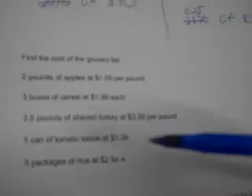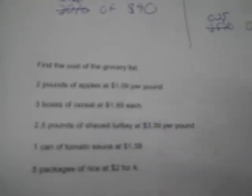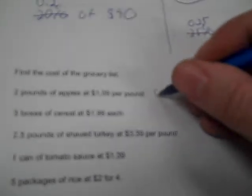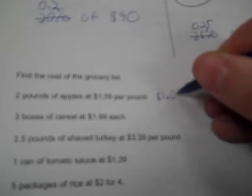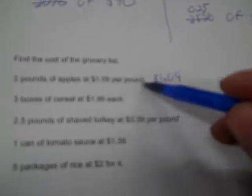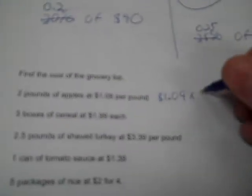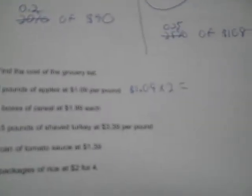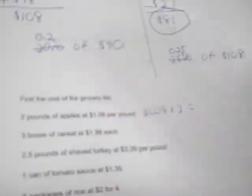Find the cost of the grocery list. Here is our things we're buying. We buy two pounds of apples at $1.09 per pound. So $1.09 per pound. Well, how many pounds are we buying? We're buying two pounds. We've got to multiply by two. That's $2.18.